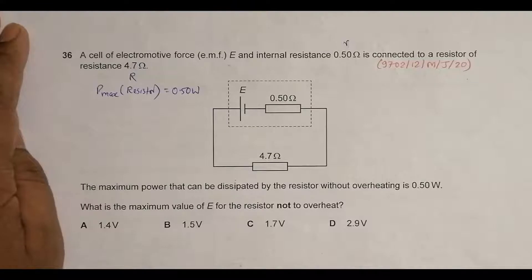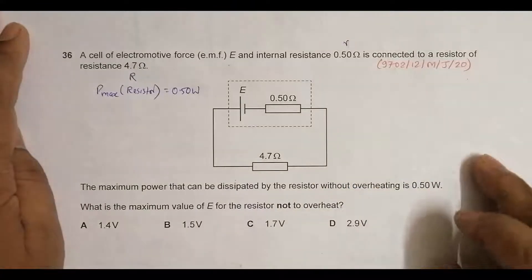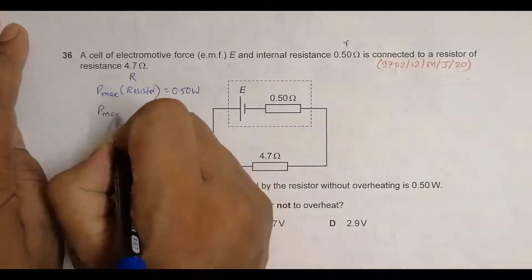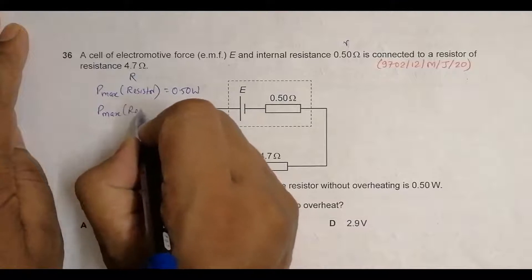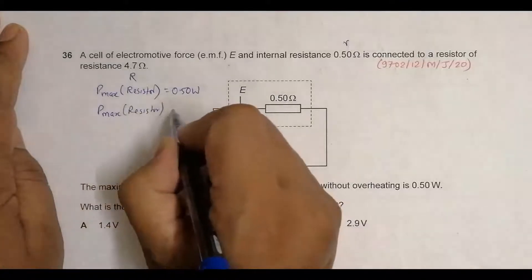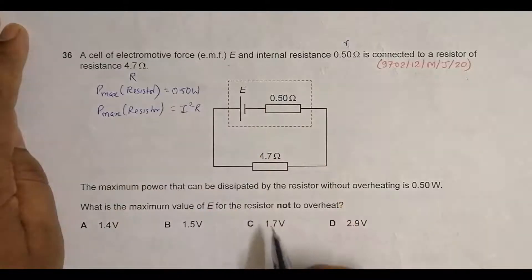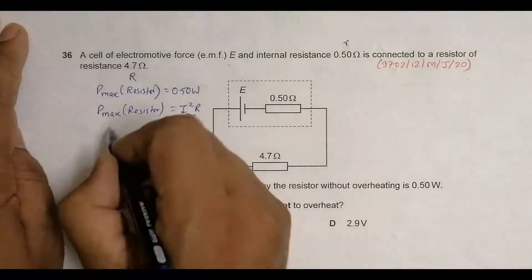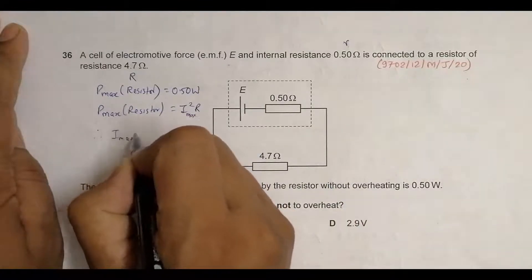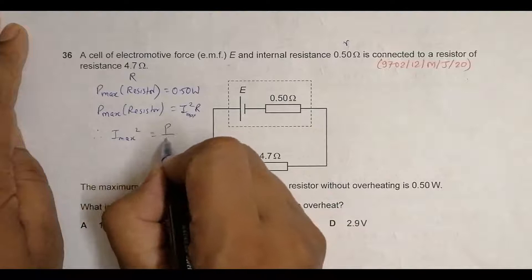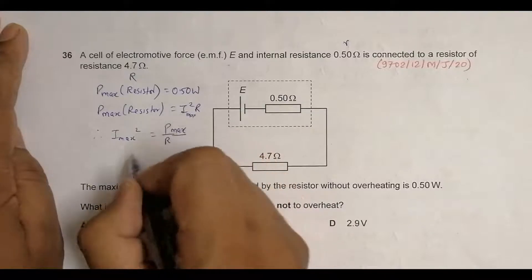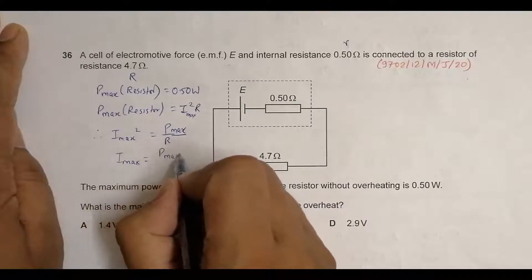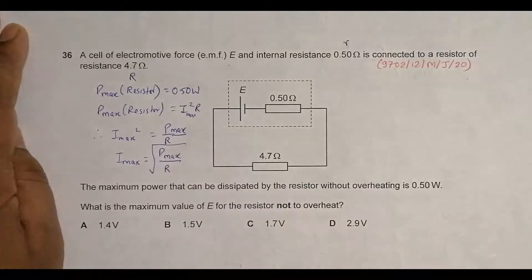When power to the resistor is at its highest, P_max equals I²R. Since R is constant, I should be at its maximum value. Therefore, I_max² equals P_max/R, so I_max should equal the square root of P_max divided by R.